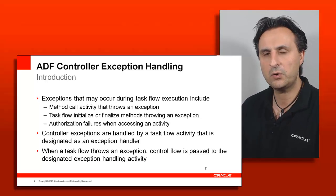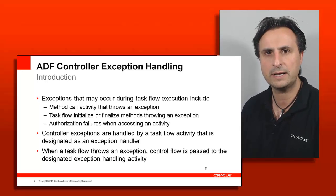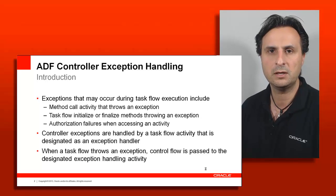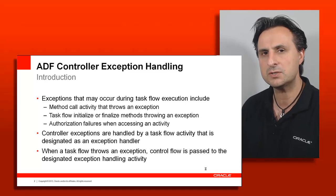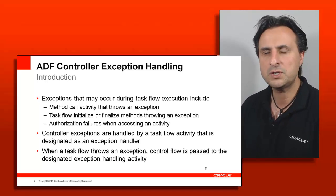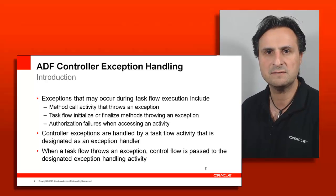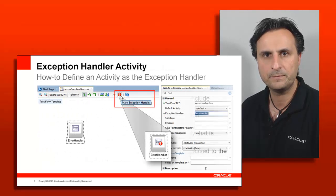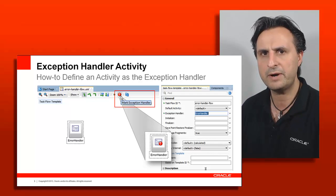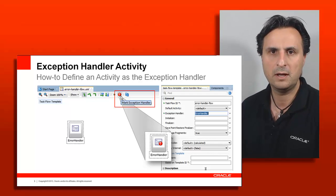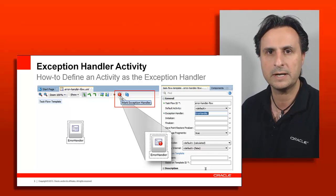Going with a plain simple approach — just marking a page or a view as the error handler — will kind of move the user out of context, which is not really what you want. Instead, what you want is to try to solve the problem or report the problem, in which case it might be a better choice to use a method activity or a router activity as the error handler. On this image, you can see the configuration of a method activity as the error handler, both on the diagram and on the property palette shown on the right-hand side.